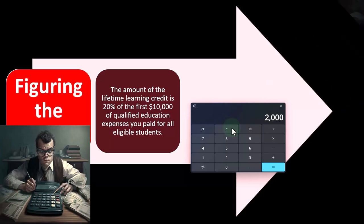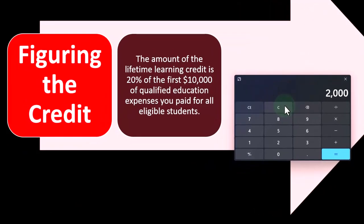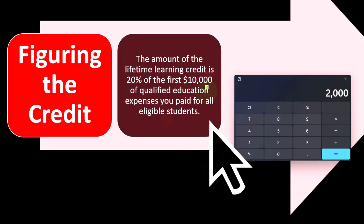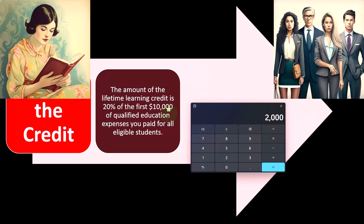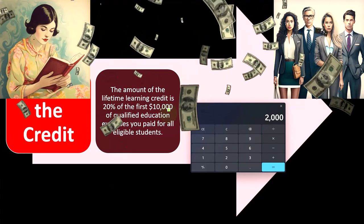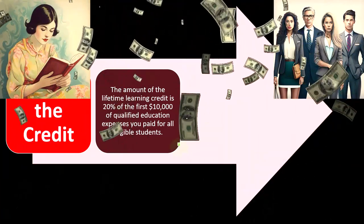Now, the American Opportunity Credit had a maximum of $2,500, and it was easier to reach that maximum because you only needed basically $4,000 to maximize the qualified education expenses to get there. Also, the items that qualified as education expenses were a bit more encompassing than what qualifies for the lifetime learning credit. So with the lifetime learning credit, you need a pretty hefty $10,000 in qualified education expenses to maximize the potential credit at $2,000.